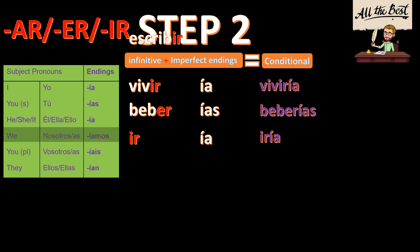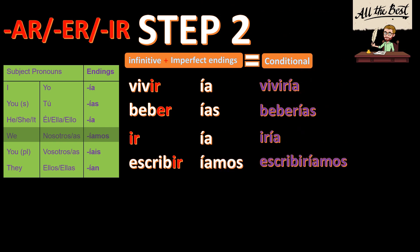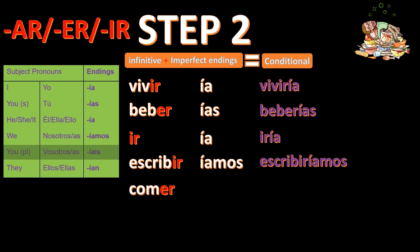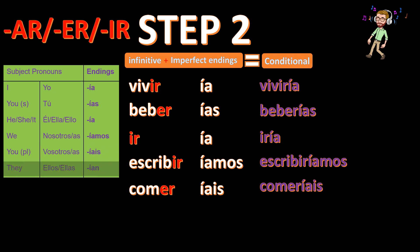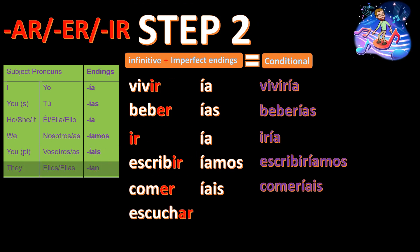Escribir plus -íamos is going to be escribiríamos. Comer plus -íamos gives us comeríamos. And finally, ellos, escuchar with -ían gives us escucharían.